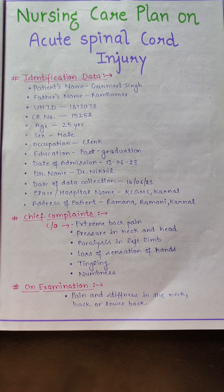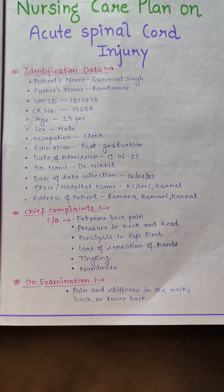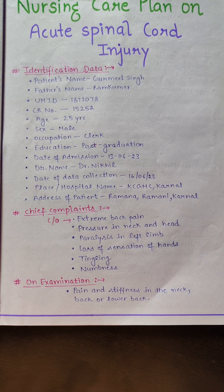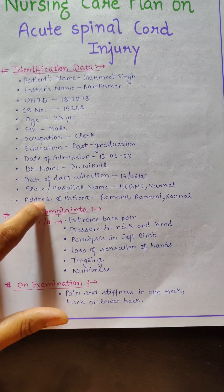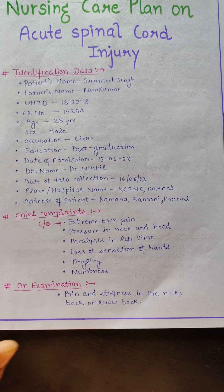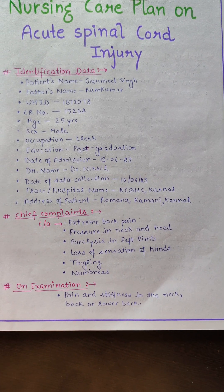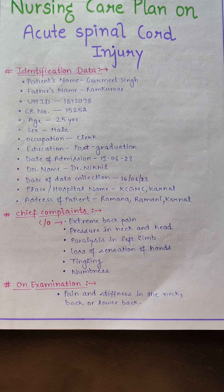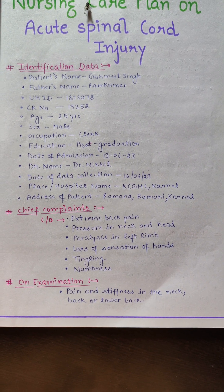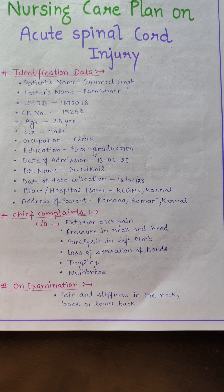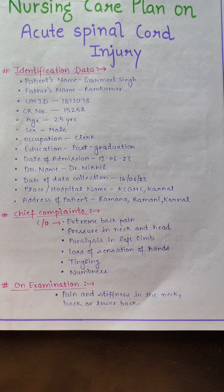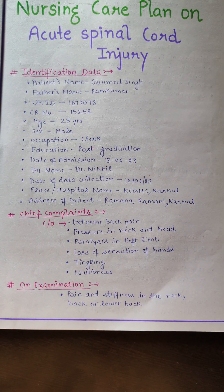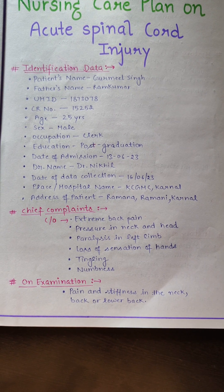We will write about the chief complaints with which the patient had come into the emergency or the ward. Chief complaints are written with C/O. In acute spinal cord injury, the patient will have extreme back pain due to injury, pressure in the neck and head, paralysis in the right or left limb, loss of sensation, tingling sensation, or numbness in the feet and limbs.